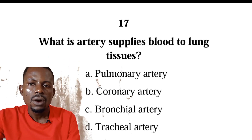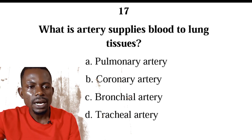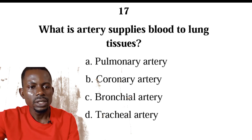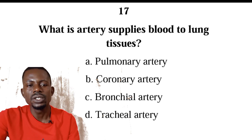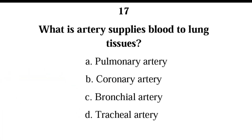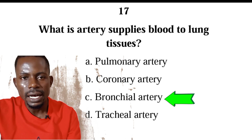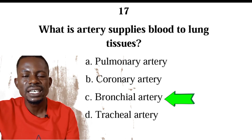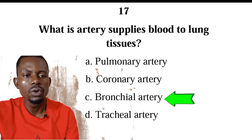Number seventeen: what is the artery that supplies blood to the lung tissues? We have pulmonary artery, coronary artery, bronchial artery, or tracheal artery. Which of these arteries supplies oxygen and nutrients to the lung tissues? The correct answer is C, bronchial artery. Oxygen and nutrients get to the cells and tissues of the lungs through the bronchial artery.